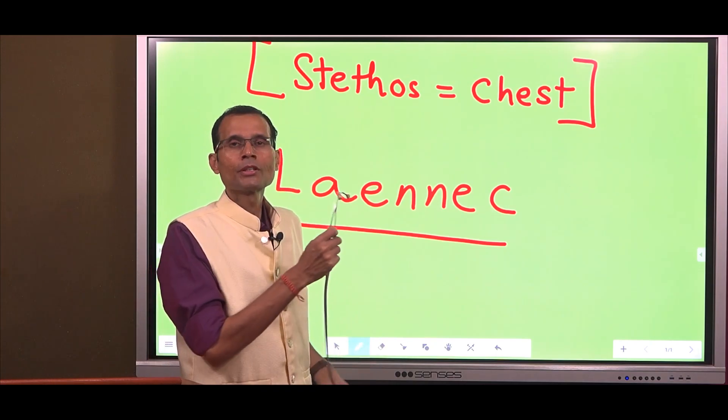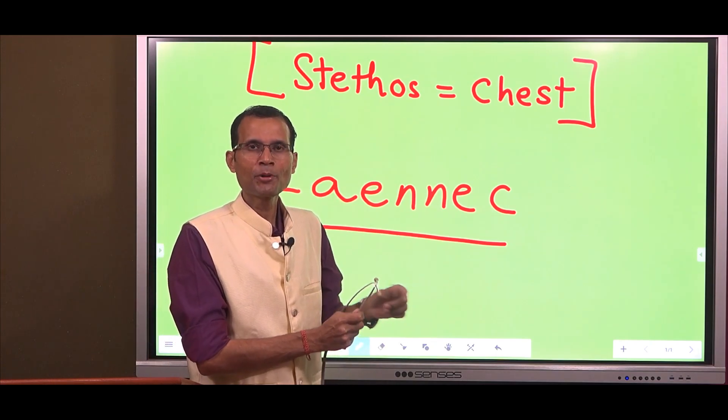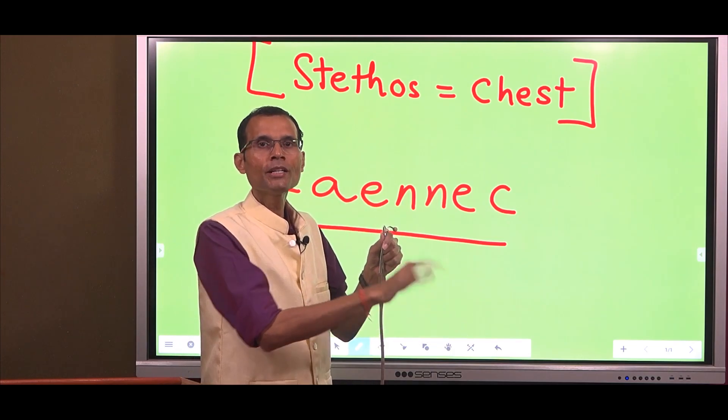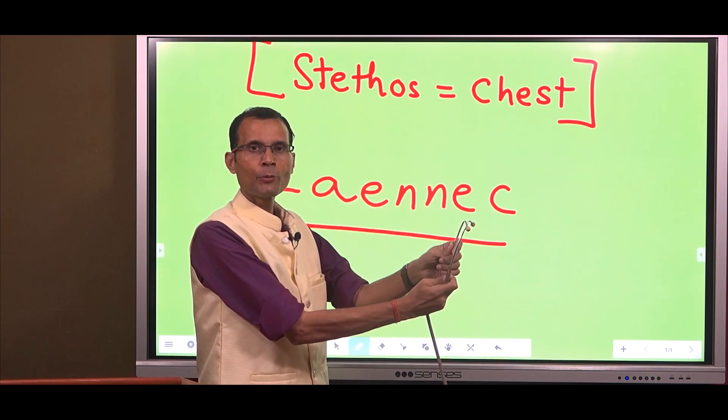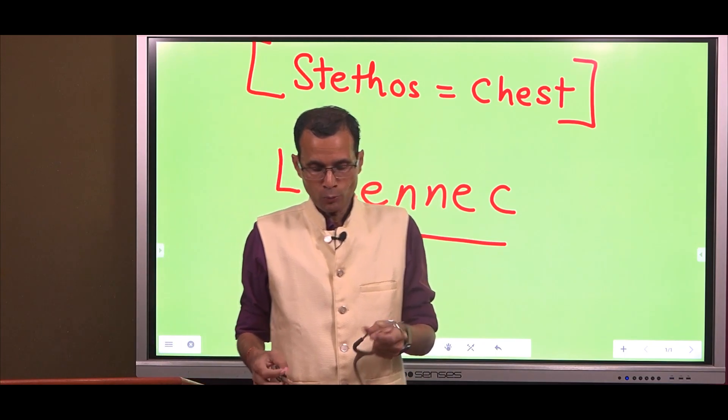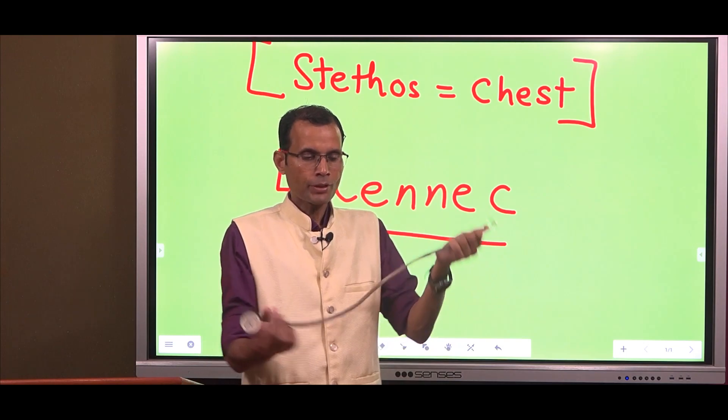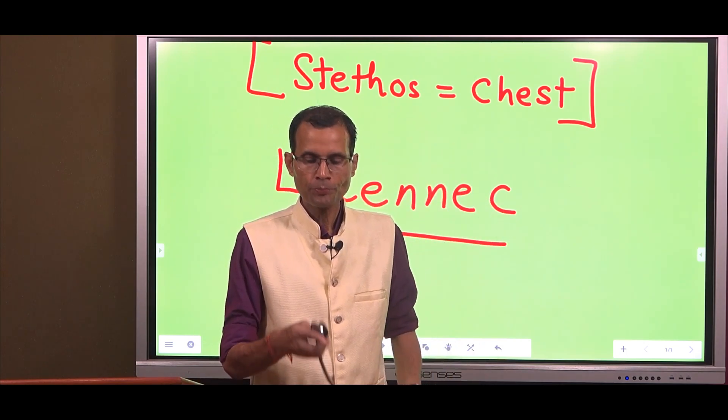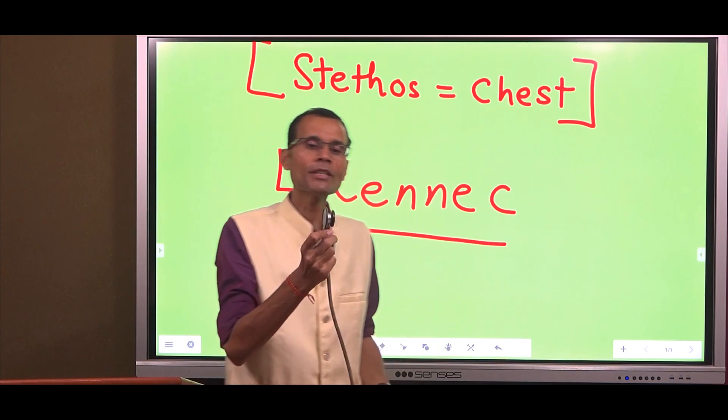Therefore, remember, ear pieces should be directed towards the patient. That's the correct way. This is incorrect. Now, that's about the ear frame. Then there is a conducting tube and there is a chest piece.